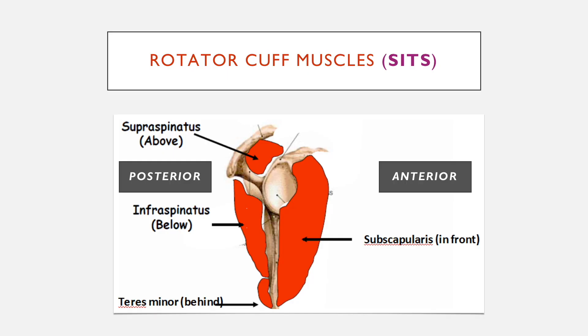There are four muscles and you can remember them using the acronym SITS. This is a lateral view, a side-on view of the scapula. There's subscapularis, which is the only one that lies in front of the scapula.